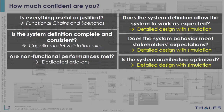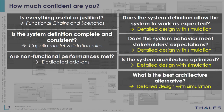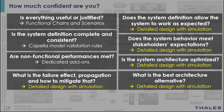Another question is: is the system architecture optimized? Here again, we can leverage simulation of the system architecture in order to add parameters and optimize those parameters against several scenarios. Another question is: what is the best architecture alternative? Simulation will provide data about the performance of the system given each architecture alternative, and based on this data you will be able to choose the architecture and justify your choice. Another type of question on the safety side is: what is the failure effect, what is the propagation of this effect, and how can I mitigate it?